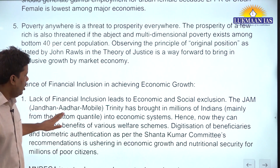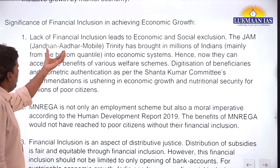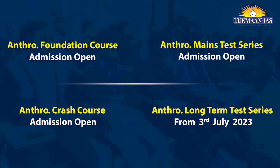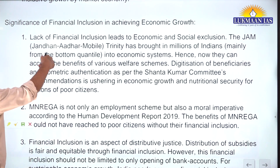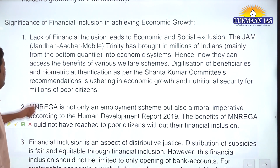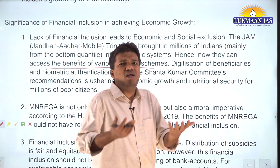Now the second part: significance of financial inclusion in achieving economic growth. Lack of financial inclusion leads to economic and social exclusion. The JAM trinity brought in financial inclusion - Jan Dhan accounts, Aadhaar, and Mobile - bringing billions of Indians mainly from lower-income groups into the financial system. However, the very bottom quintile is still partially missing from the JAM ecosystem. Once people are in the system, they can access welfare schemes, subsidies for food, and there will be economic growth.